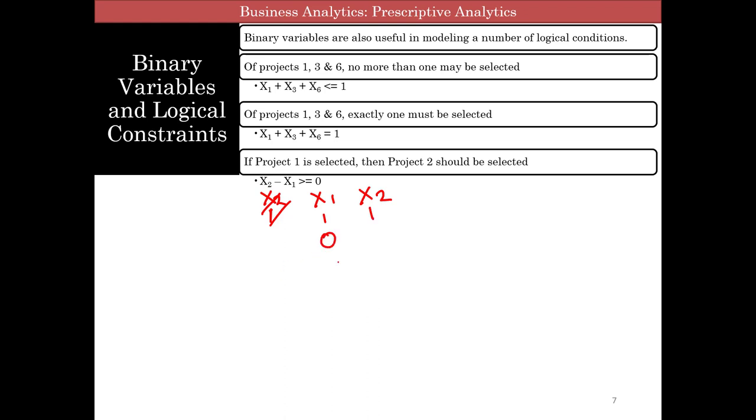If x1 is not selected, then project two can be either selected or not selected. It doesn't matter. It can be zero or one, which means that x2 will always be greater than x1, right? So x2 minus x1 is greater than or equal to zero, or x1 minus x2 is less than or equal to zero. So x2 values will either be equal to or sometimes it can be greater than, but it'll never be less than the value. And that's why you have x2 minus x1 greater than or equal to zero.